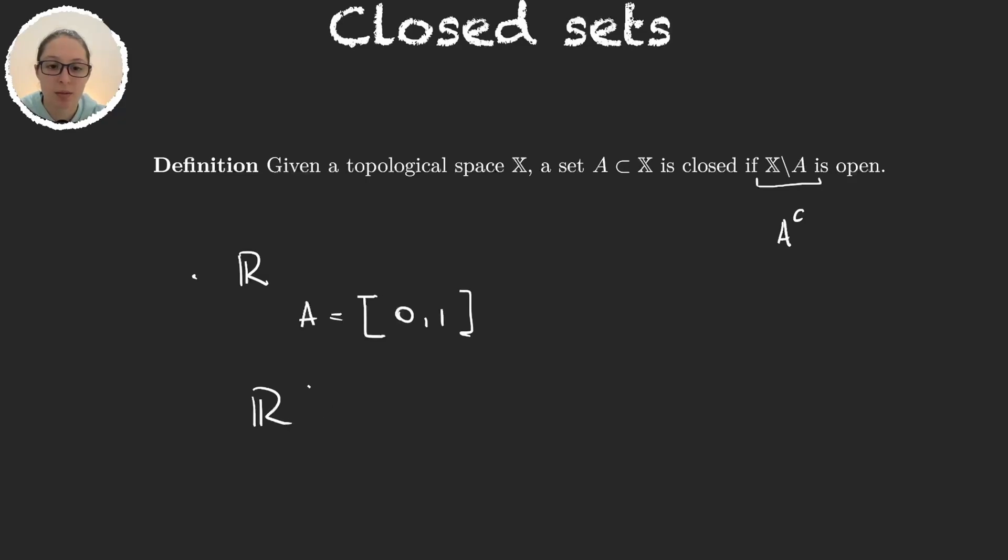Well what is ℝ minus [0,1]? This set is (-∞,1) union (1,∞) and we know that these two sets are open and so the union of open sets is also open. So the real numbers minus [0,1] is an open set and so [0,1] must be closed.